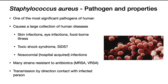Now we move on to Staphylococcus aureus. Staphylococcus aureus is one of the most significant pathogens of humans. It causes an extensive array of human diseases, including skin infections, eye infections, food-borne illness, toxic shock syndrome, and may have a role in sudden infant death syndrome.